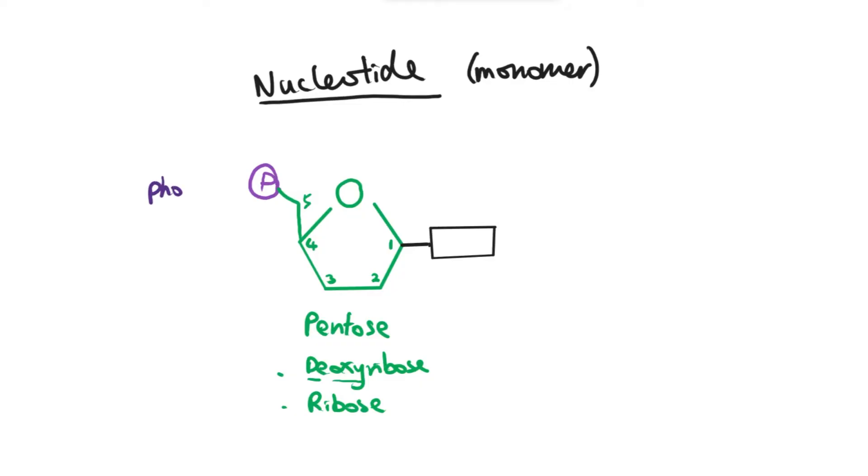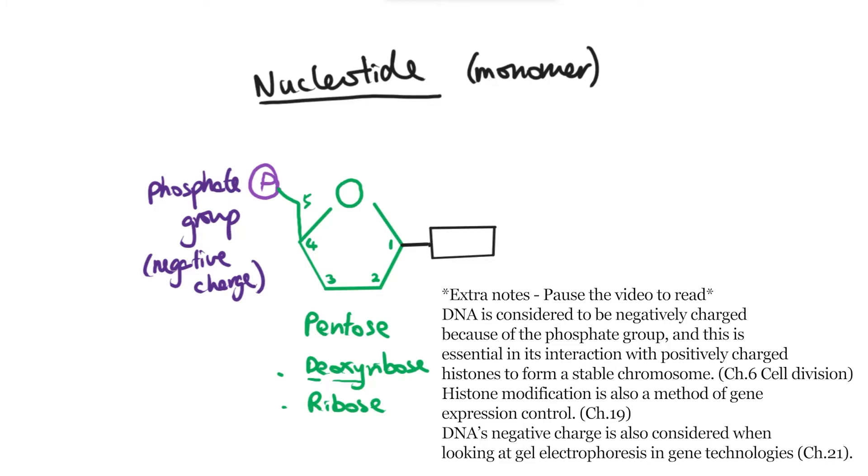On the left here you can see this one, that is a phosphate group. You will come across phosphate groups in loads of different concepts in biology. Basically this one here is just a simple phosphate group that is attached to carbon number 5, and it's worth noting that it is negatively charged.